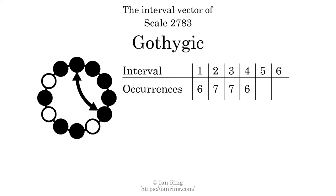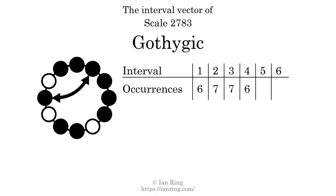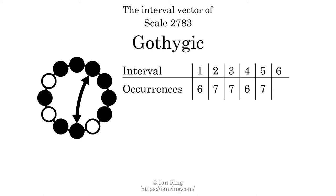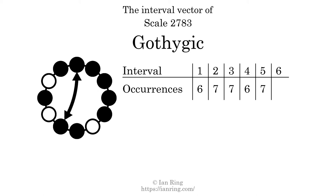The 6 intervals of size 4 semitones are at positions here, here, here, here, here, and here. There are 7 intervals with the size of 5 semitones, at positions here, here, here, here, here, here, and here.